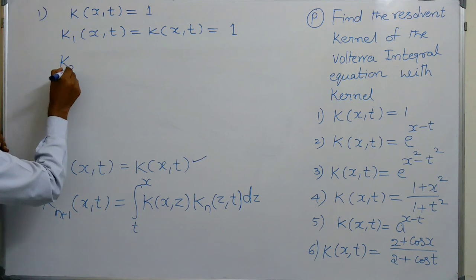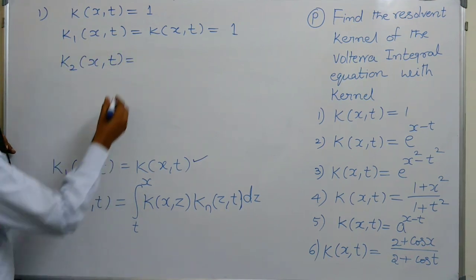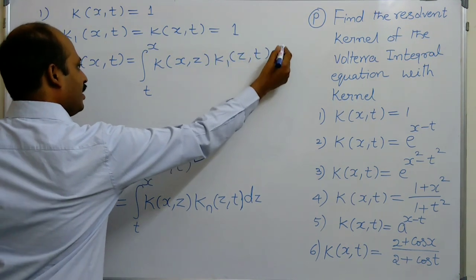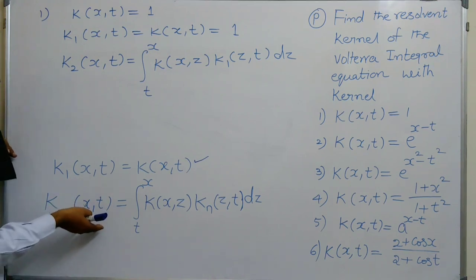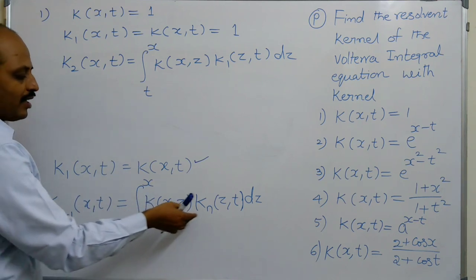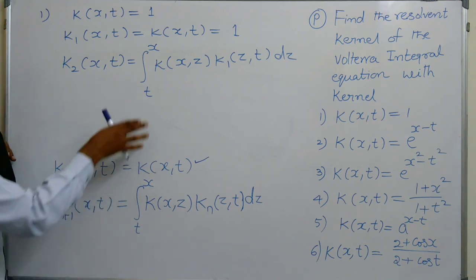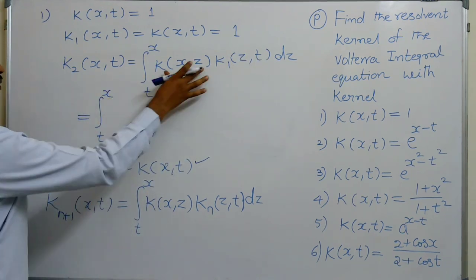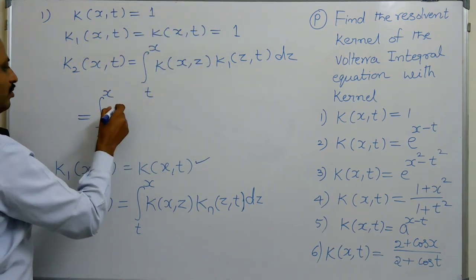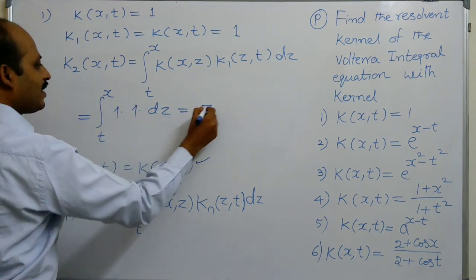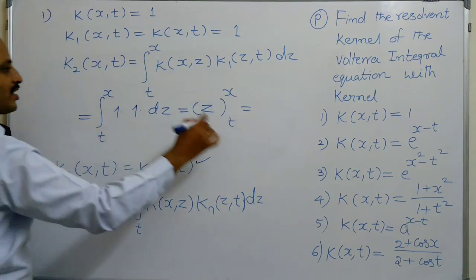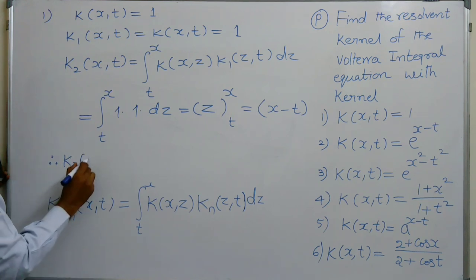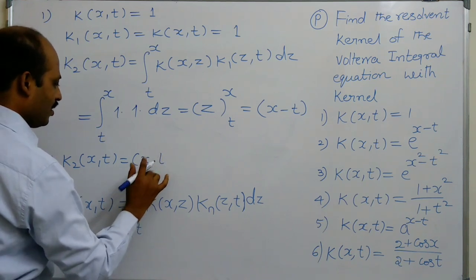By using the formula, K2 of X, T equals integral from T to X of K(X, Z) times K1(Z, T) dZ. Since both K(X, Z) and K1(Z, T) equal 1, this becomes integral T to X of 1·1 dZ, which equals [Z] from T to X. The upper limit is X and lower limit is T, giving X minus T. Therefore K2 of X, T equals X minus T.